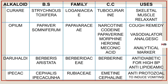So Curare, Opium, Daruhaldi, and Ipecac — all are coming from different families. These chemical constituents are very important, especially in the case of Opium, which belongs to the family Papaveraceae and has different chemical constituents and their uses.